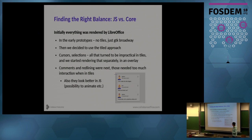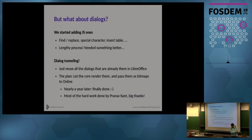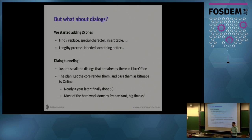We started rendering the cursor coordinates in a layer on top of the tiles. Then comments and their lines turned out to be practical to render in JavaScript, because people are used to comments having a nice UI — they look pretty, can have pictures, and flow next to the cursor. But then what about dialogues? At first we started implementing some dialogues in JavaScript — find and replace, special character insert, table — but it turned out there were just too many dialogues and it was impractical. There are hundreds of dialogues in LibreOffice.